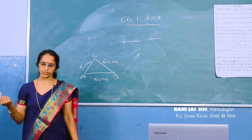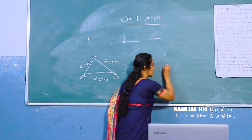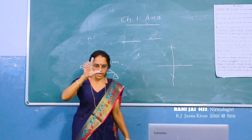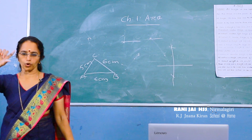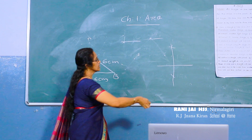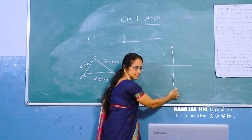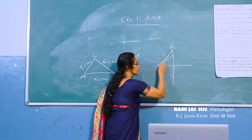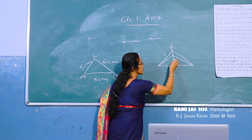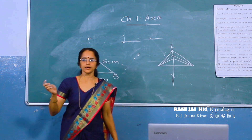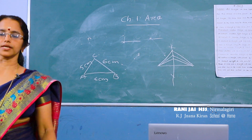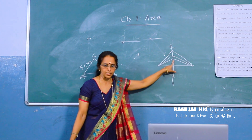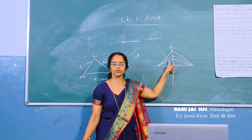How can we construct an isosceles triangle? If you draw a line and draw the perpendicular bisector — taking more than half the length and drawing from both sides — then mark a point anywhere on this line, we get different isosceles triangles. When we join any point on the perpendicular bisector to the endpoints of the base, we get an isosceles triangle.